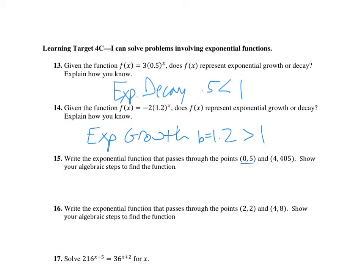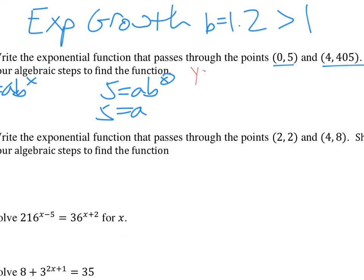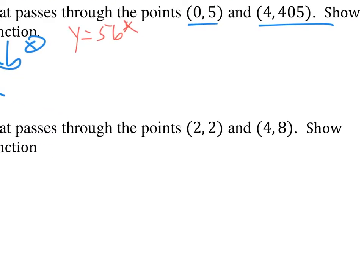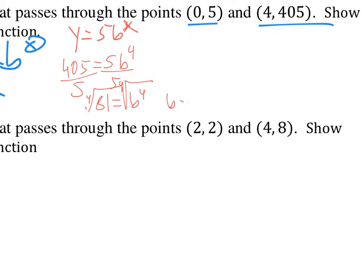We want an exponential function y equals A times B to the X that goes through two given points. Substitute 0 for X and 5 for Y — B to the 0 is just 1, so A is 5. Now we've got A equals 5, so we can find our B value. We have y equals 5·B to the X, and we substitute X equals 4, Y equals 405: we get 5·B to the 4th. Divide by 5, and we get 81 equals B to the 4th. Take the 4th root, and B equals 3. So our function is y equals 5 times 3 to the X.